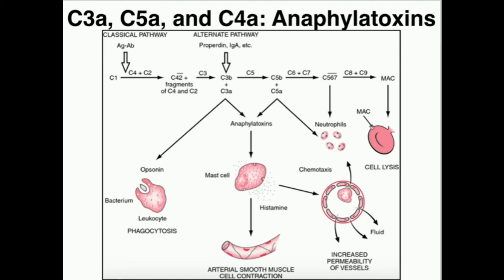Another thing they do is very strongly cause degranulation of mast cells. A mast cell is a white blood cell that contains granules with a lot of histamine. Histamine is a molecule derived from the amino acid histidine, and it's able to promote blood vessel vasodilation and increased vascular permeability. C3A and C5A are able to cause degranulation, meaning those granules are dumped out and the histamine is released into the systemic circulation.